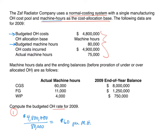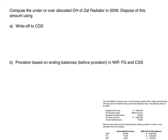Now we'll use this rate to compute our applied overhead and then close the overhead account. We take the $60 per machine hour rate and multiply it by the actual machine hours used. From the data we know we actually used 75,000 machine hours, so the amount of applied overhead is $4,500,000.